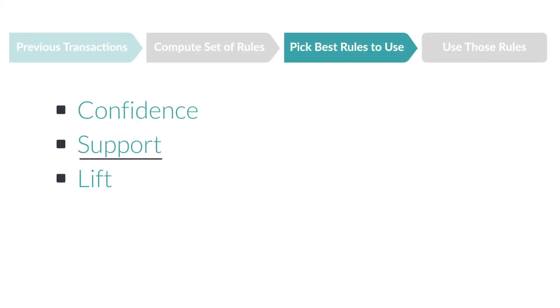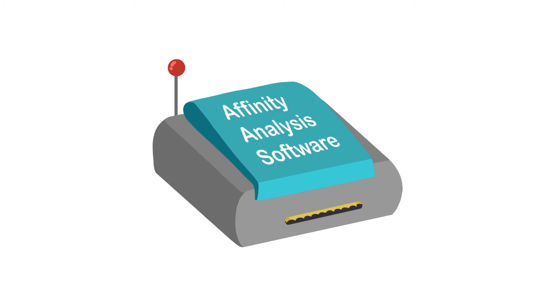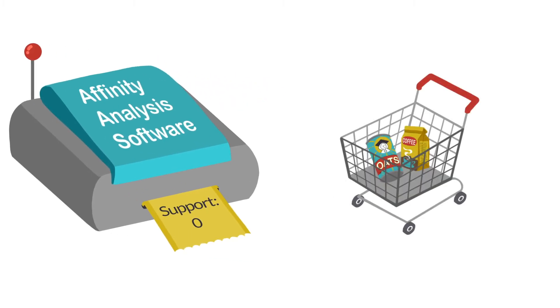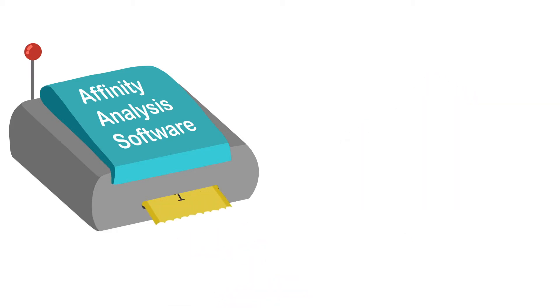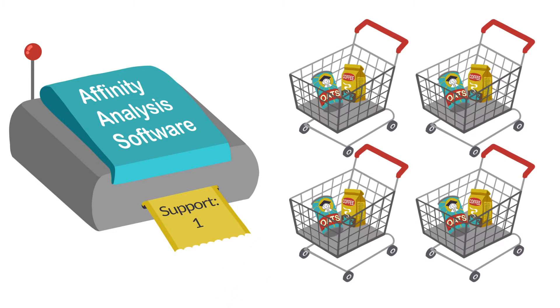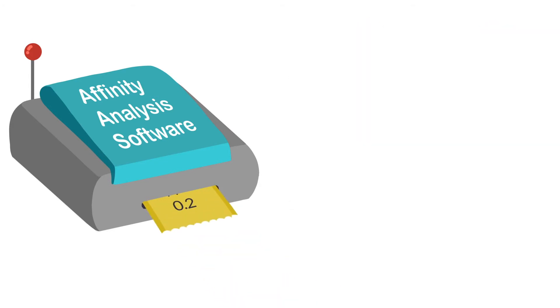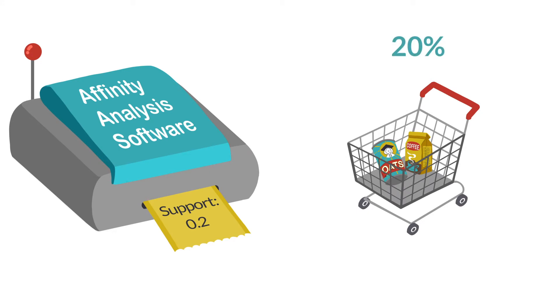What if a rule has a lot of confidence but occurs so rarely we would almost never encounter it? We use another measure to gauge frequency: support. The support of a rule measures how frequently all the terms involved occur. Our affinity analysis software also calculates support as a number between zero and one. If the support is zero, this combination never happened. If the support is one, every single transaction contained both items. Something with a support of 0.2 would have those items occurring together in 20% of overall transactions. Generally, the higher the support, the more frequently these two items occur in your entire dataset.